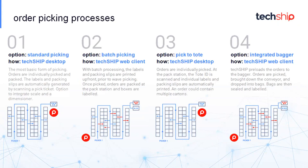These are the most common ways to use these features when picking. Option one — standard individual picking — uses the TechShip desktop client where orders are individually picked and packed, and labels and packing slips are automatically generated by scanning a pick ticket. You're typically integrated with a scale and dimensioner at the packing station to get accurate weight and dimensions, though you can also manually type in packing options if you don't have those devices.